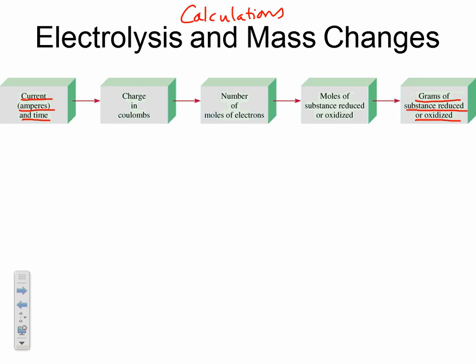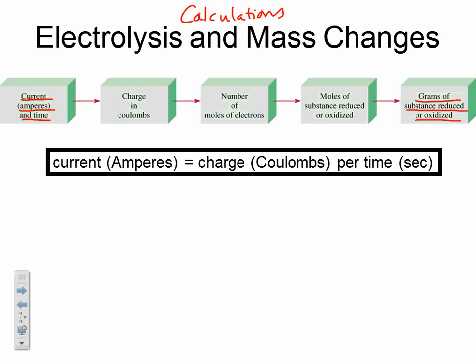To convert current into grams, we use a series of conversion factors. First, current is measured in amps, and amps are defined as coulombs per second. So every time you see amps written, cross it off and write coulombs per second — that's what it is, and it will help with dimensional analysis. This relationship is on the reference table.